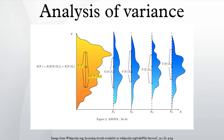The fundamental technique is a partitioning of the total sum of squares SS into components related to the effects used in the model. For example, the model for a simplified ANOVA with one type of treatment at different levels. The number of degrees of freedom DF can be partitioned in a similar way. One of these components specifies a chi-square distribution which describes the associated sum of squares, while the same is true for treatments if there is no treatment effect. See also lack of fit sum of squares.